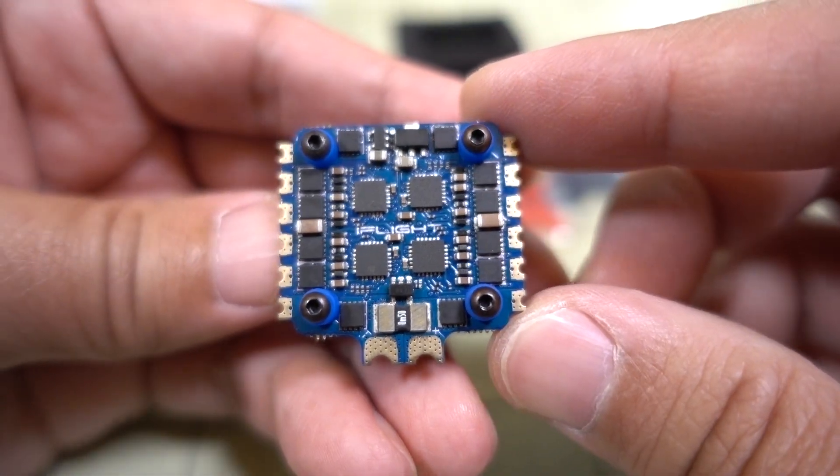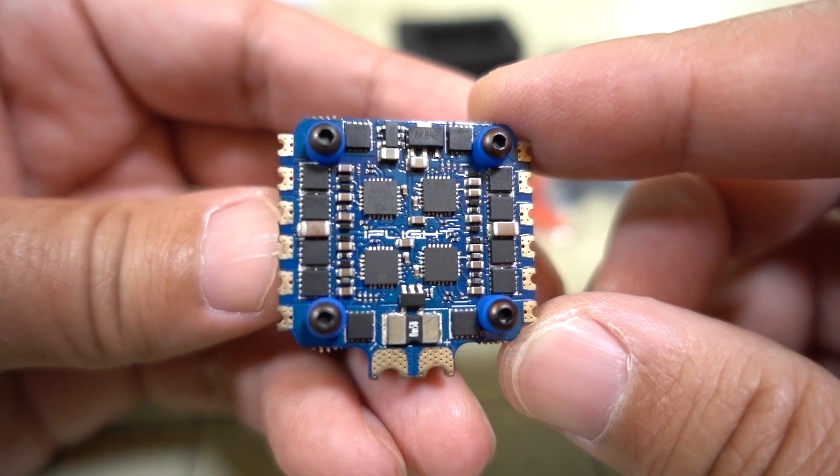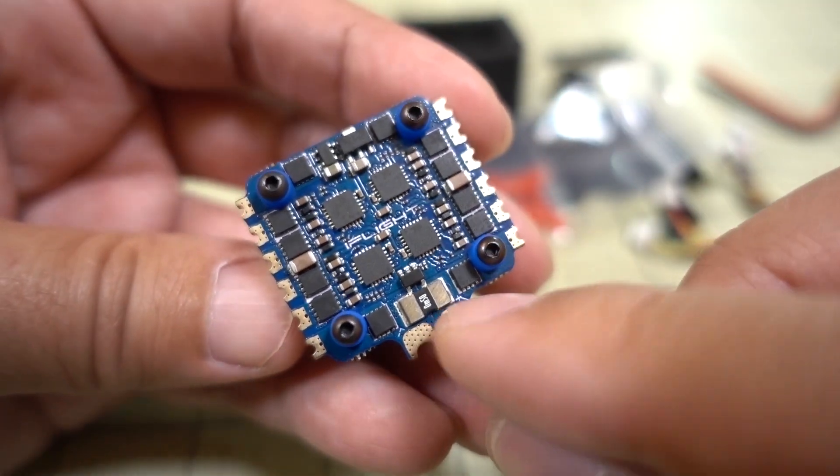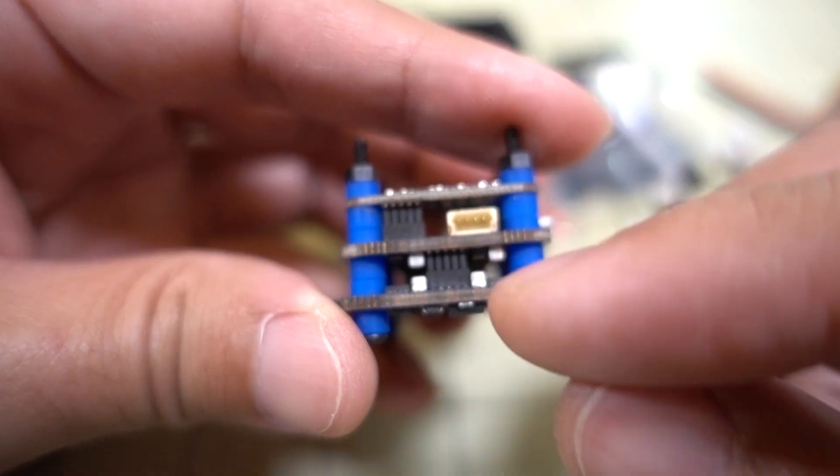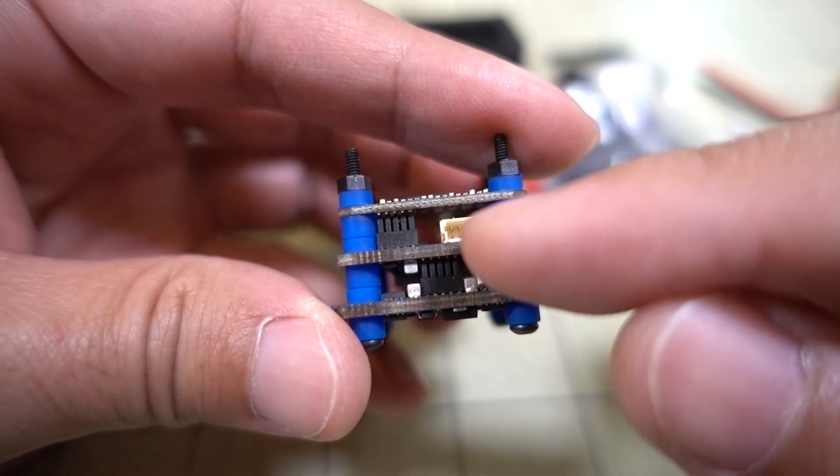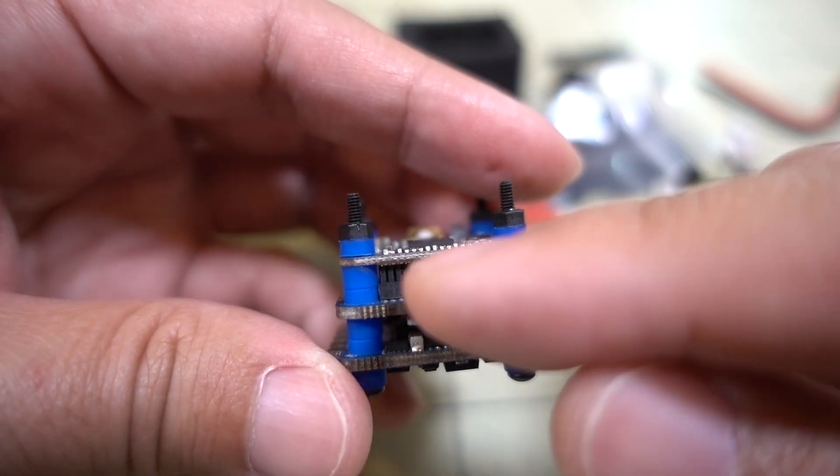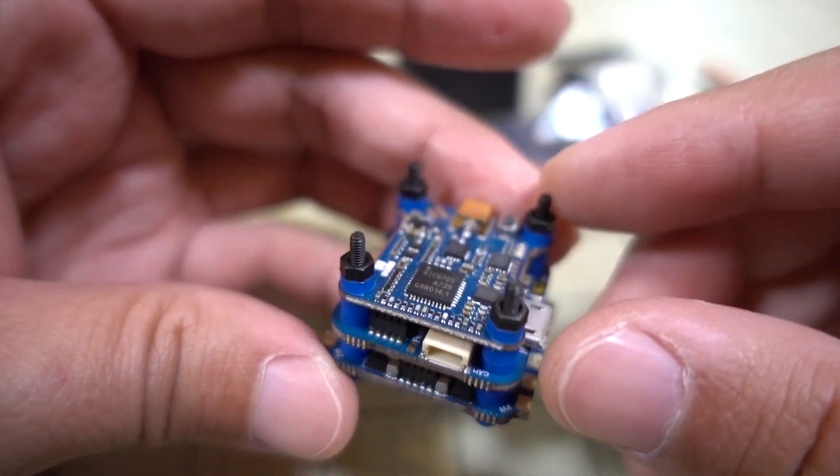And we have a 4-in-1 ESC. I believe this is a 35-amp 6S 4-in-1. We have a current sensor there. Obviously all your connections between the 4-in-1 ESC and the flight controller are via these pins. And then the video transmitter and the flight controller are via these pins here.